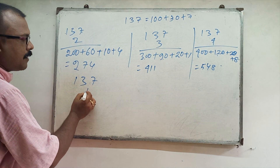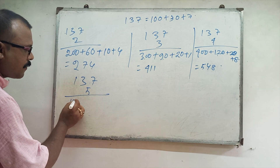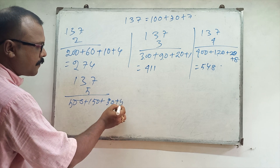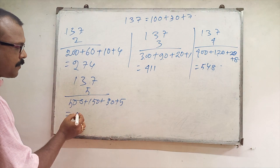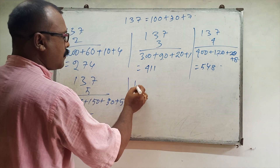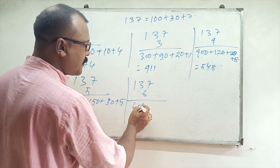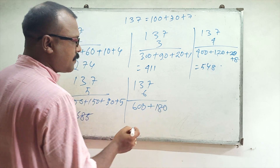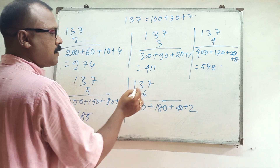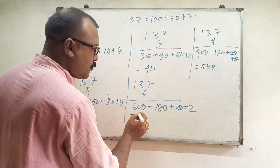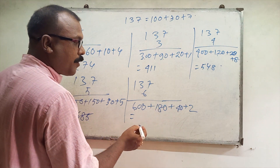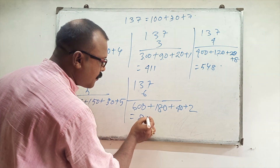137 fives: 500 plus 150 plus 35, so 685. 137 sixes: 600 plus 180 plus 42, so 822.